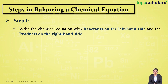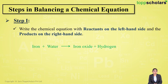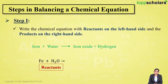Write the reactants on the left-hand side and the products on the right-hand side. For example, iron reacts with water resulting in the formation of iron oxide and hydrogen. Write the reactants — iron and water, that is Fe + H₂O — on the left-hand side.